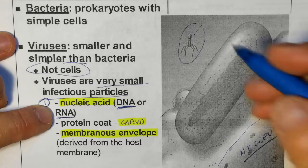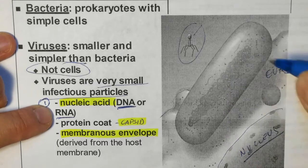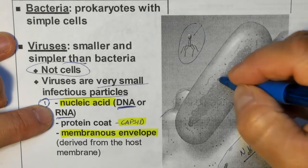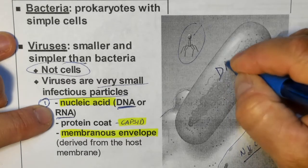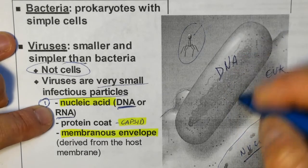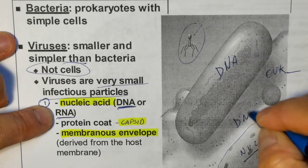Remember, all cells — bacteria and eukaryotic cells — they all have only DNA.